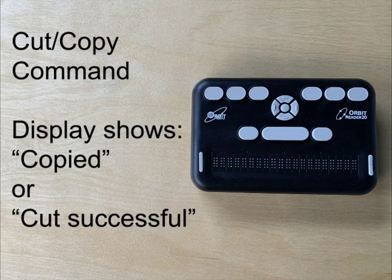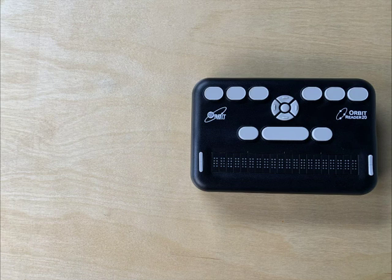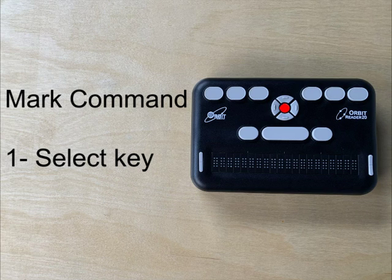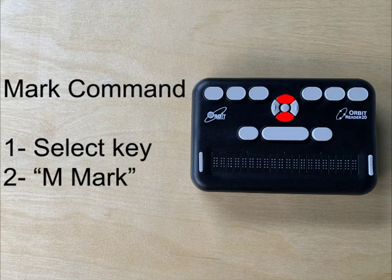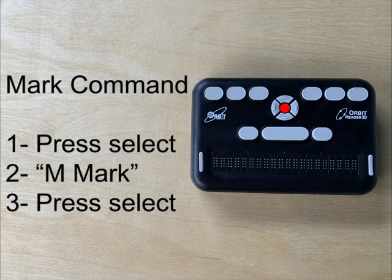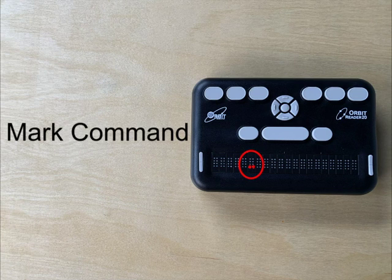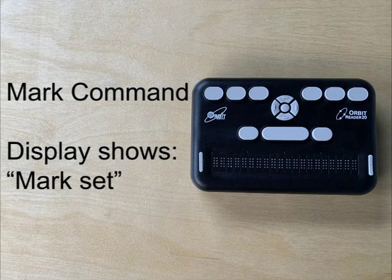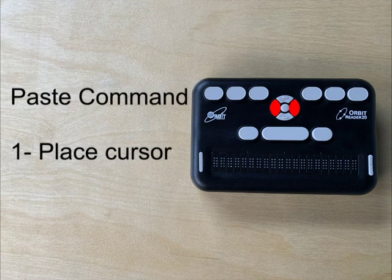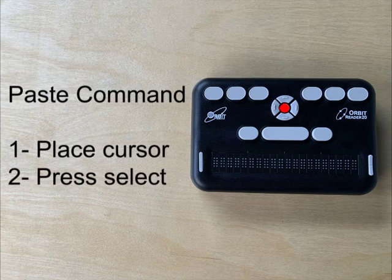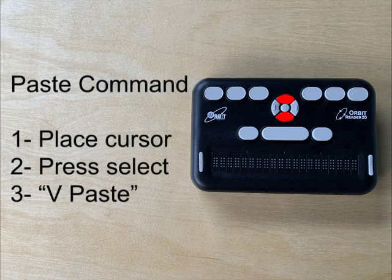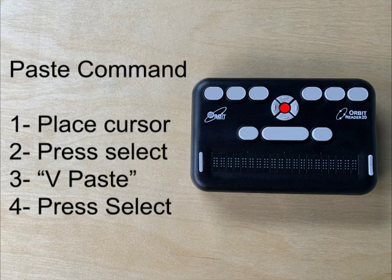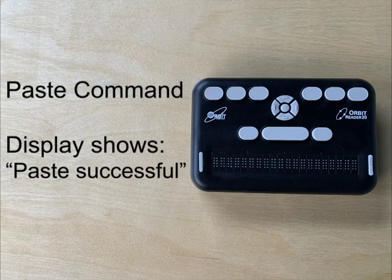The display will show copied or cut successful. To mark multiple items, press select, then navigate to M mark and press select again. Marked characters will be shown by raised dots 7 and 8. The display will show mark set. To paste, first place the cursor where you would want the content to be pasted. Press select, navigate to V paste, and press select again. The display will show paste successful.